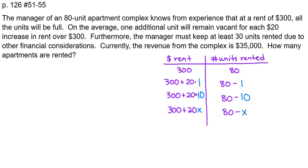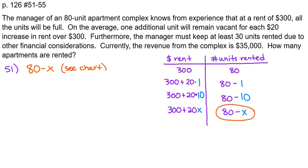Once we figure that out, we're ready to do this problem. Problem 51: How many units are rented? We just figured that out — if they have x price increases, then 80 minus x units are rented. Problem 52: What is the amount of rent if you increase the price x times? That would be 300 plus 20x.